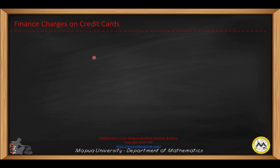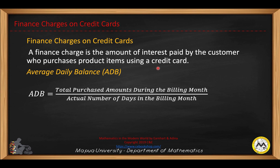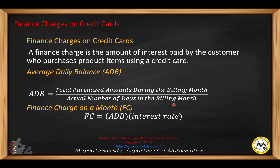Now we go to the finance charges on credit cards. A finance charge is the amount of interest paid by the customer who purchases product items using a credit card, which is based on the average daily balance. The average daily balance is computed as the total purchase amount during the billing month divided by the actual number of days in the billing month, usually 30 days. The finance charge for the month, using the simple interest rate, will be the average daily balance multiplied by the current rate.